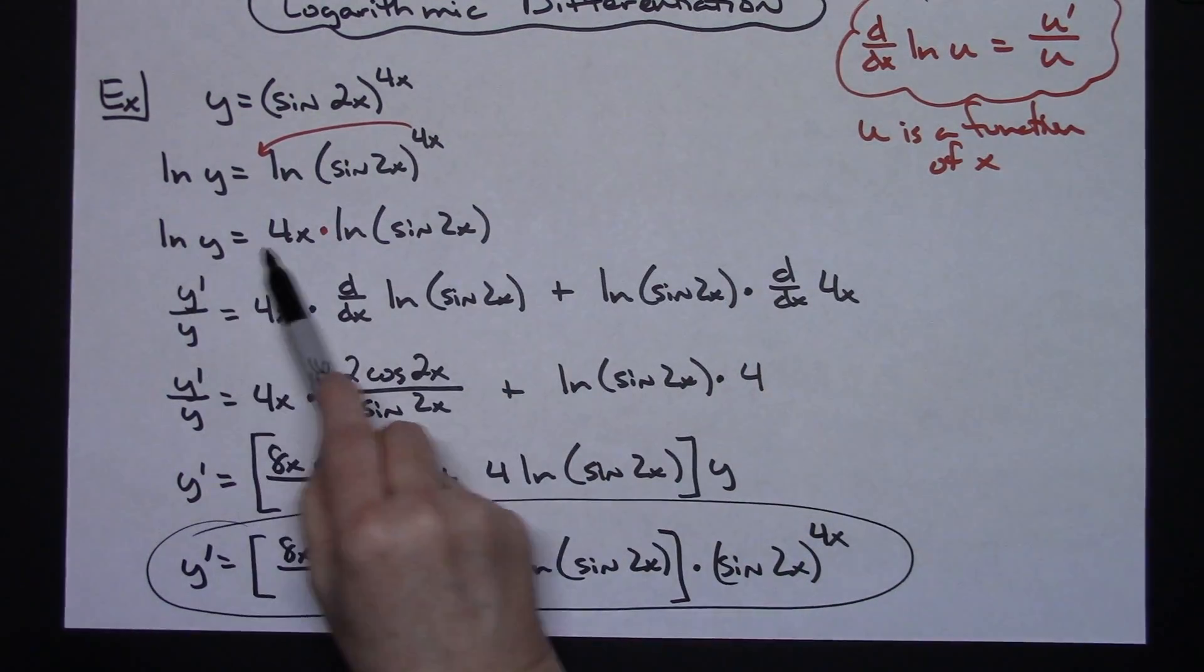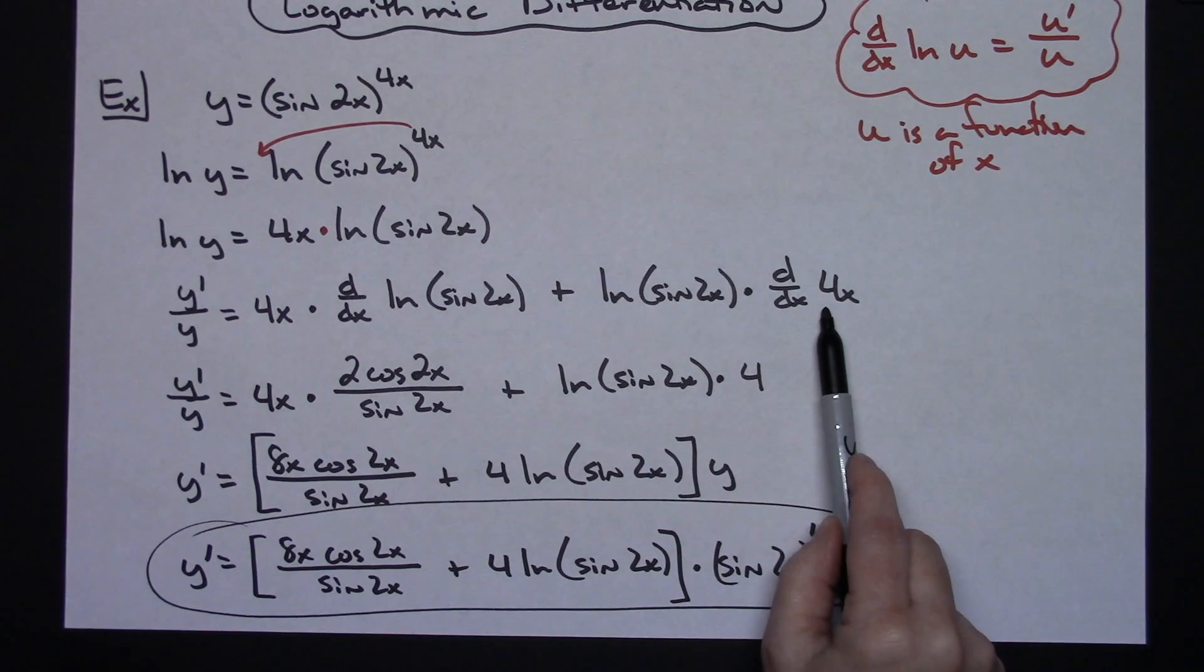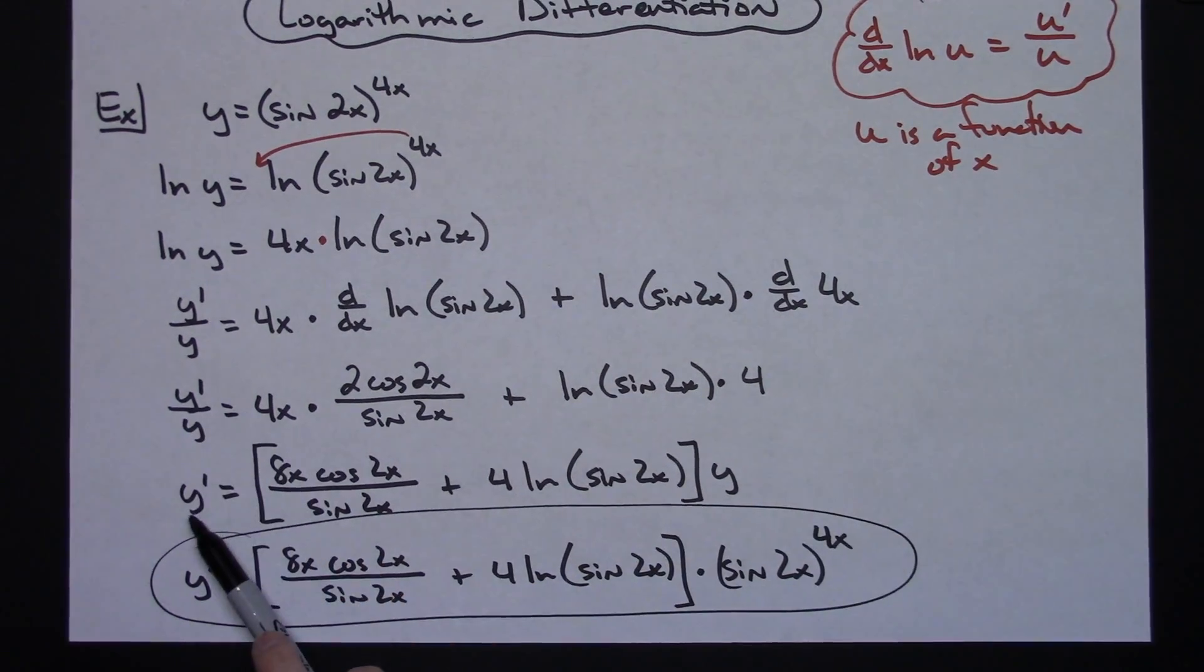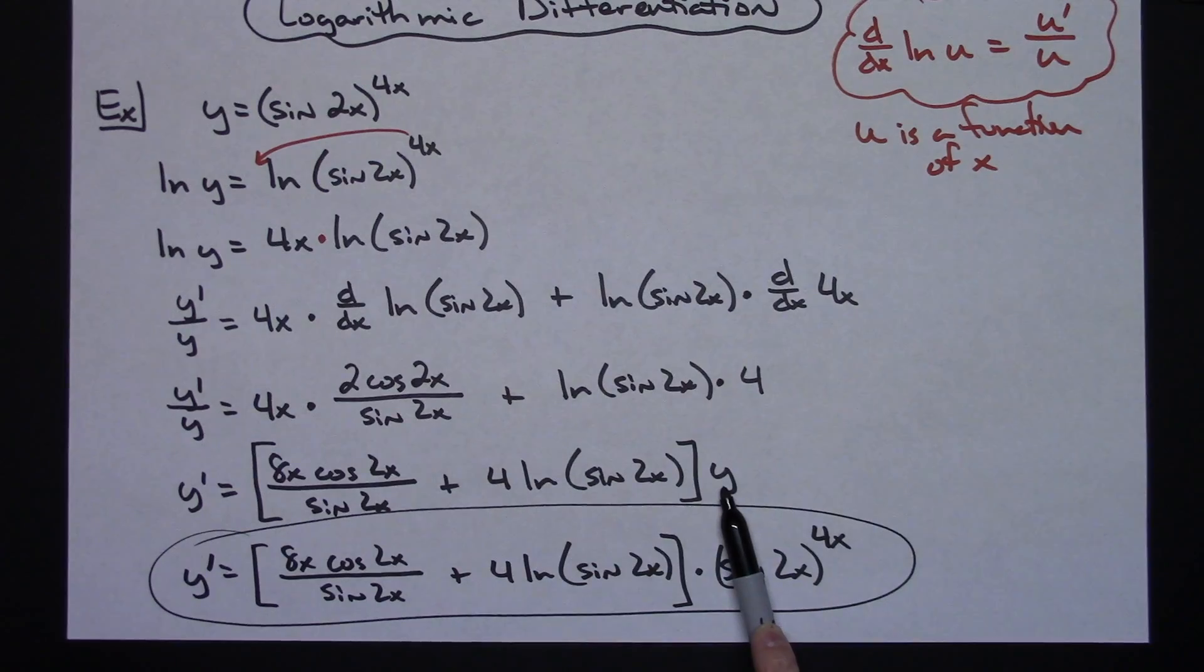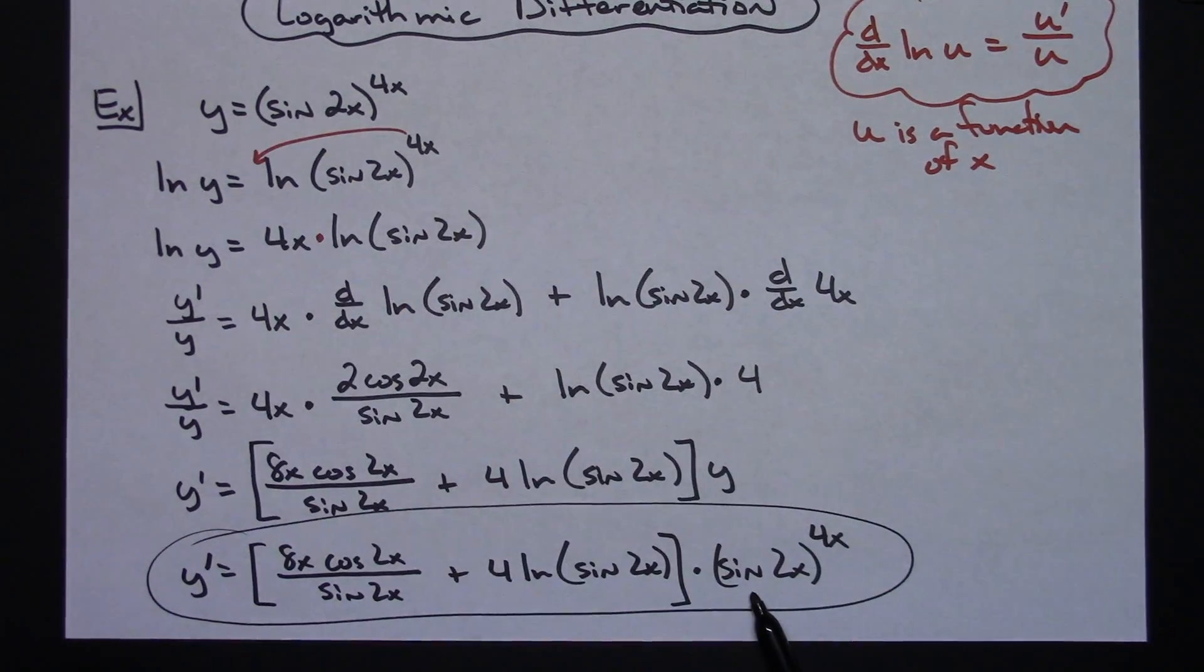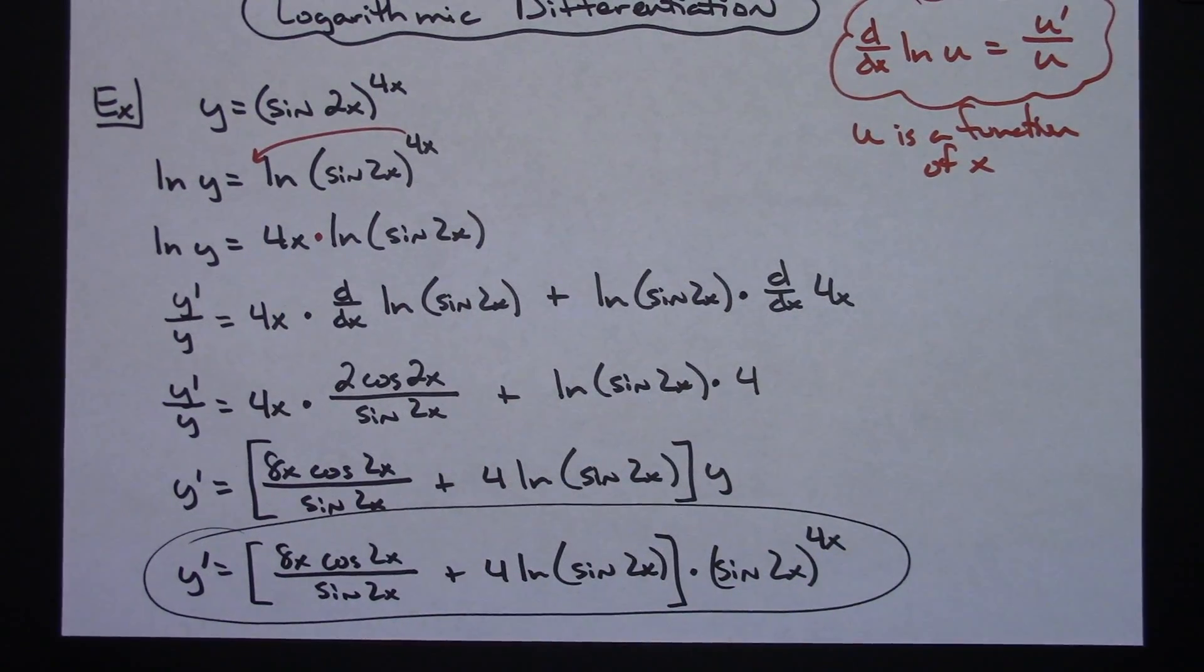Take the log of both sides, apply log rules, take the derivative of both sides, ultimately solve for y prime. When you've got a plain y over here, make sure you substitute back in as your final step whatever y is equal to there.